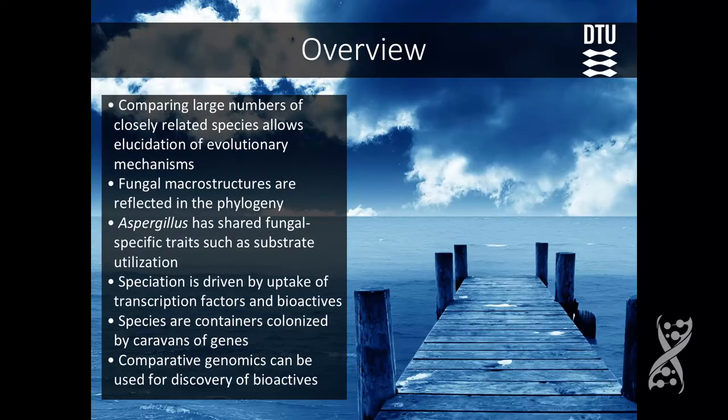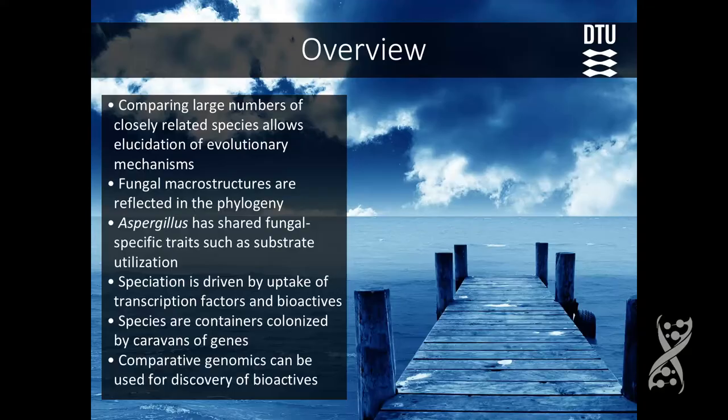To summarize: when we're comparing all of these hundreds of genomes, we can actually come up with hypotheses on anything from evolutionary mechanisms to the actual pinpointing of biochemical activities of specific genes — in particular for bioactive compounds. We also see this thinking that's quite useful when working with genomes this way, a phrase from a paper by Antonis Rokas' group: you can see species as containers being colonized by caravans of genes. If you think about it this manner, some things that can be quite hard actually become rather obvious.